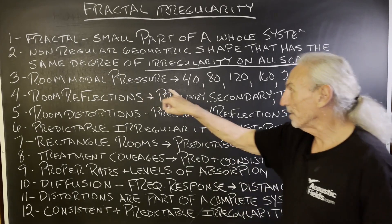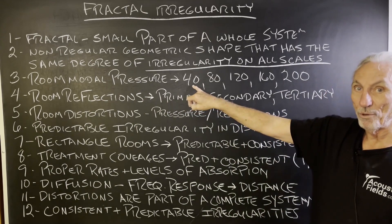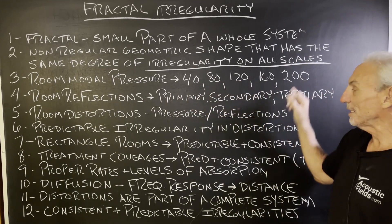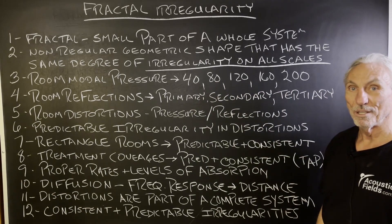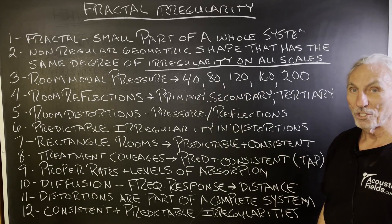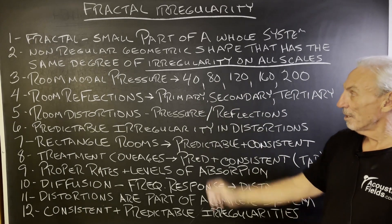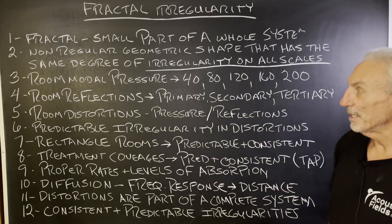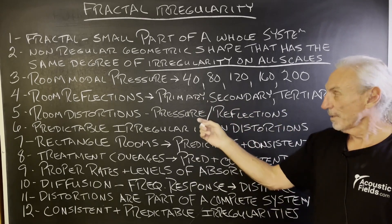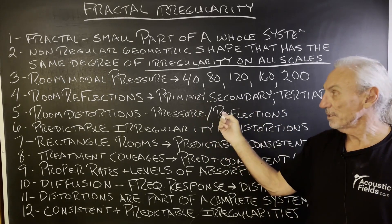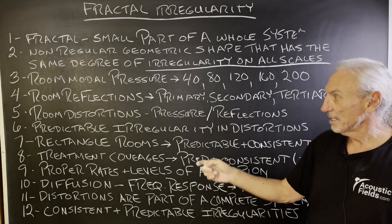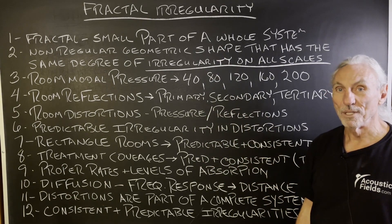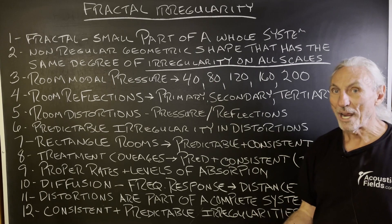Room modal pressure: a fundamental of 40 produces 80, 120, 160, 200 issues in the harmonic range. Room reflections — primary, secondary, tertiary. Room distortions are pressure and reflections. They're a part of a whole system, so they're a fractal.